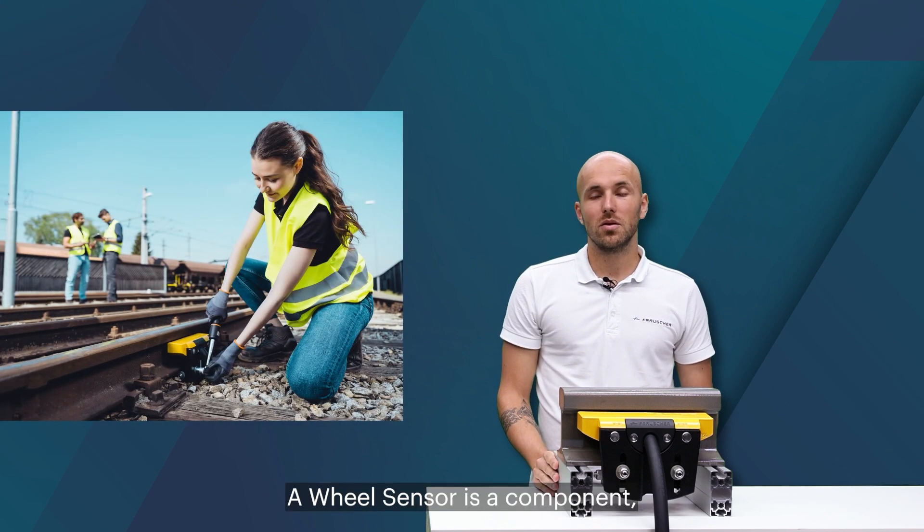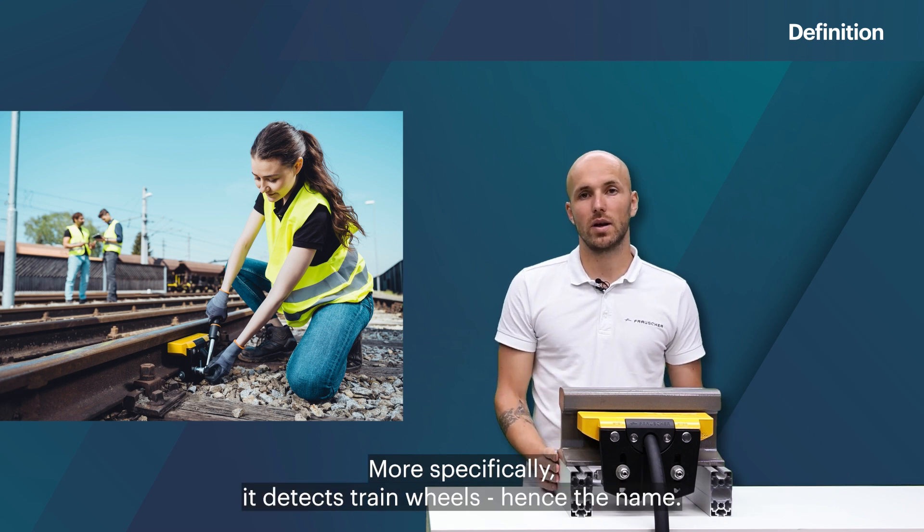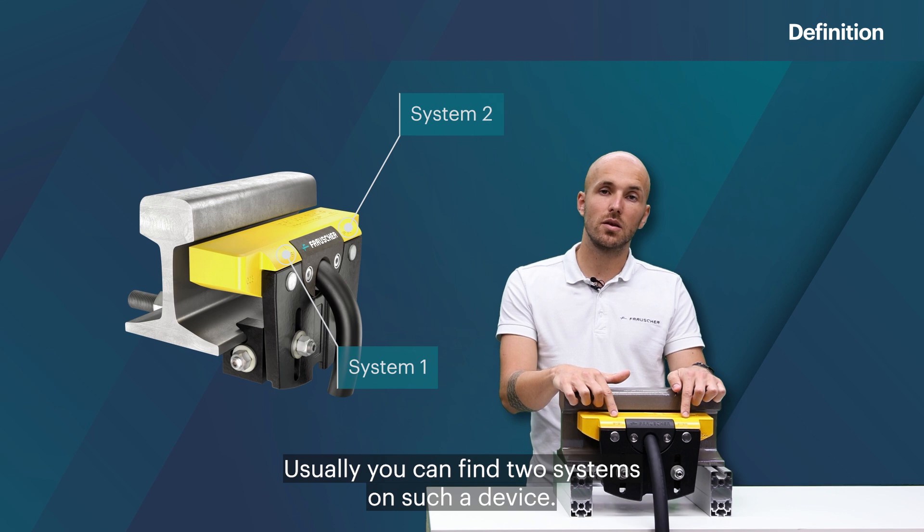A wheel sensor is a component which is mounted on a railway track in order to detect trains. More specifically it detects train wheels, hence the name. Usually you can find two systems on such a device.